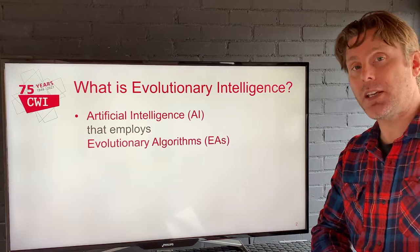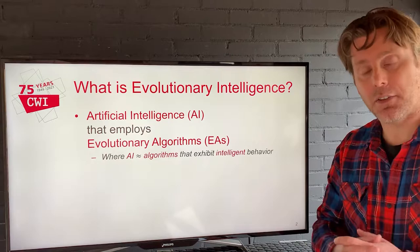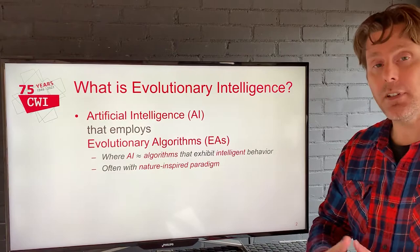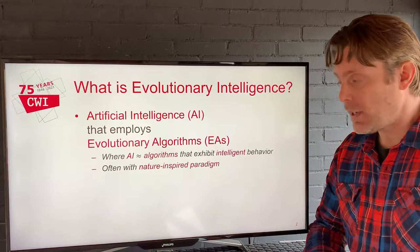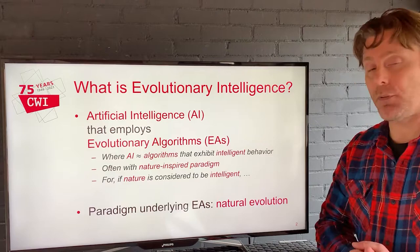Artificial intelligence is a very popular term nowadays that's open to many different definitions and interpretations, so to make sure we're on the same page I'll give you my definition. To me, AI is more or less algorithms that exhibit intelligent behavior. As a computer scientist, I like to think in terms of algorithms as they can be used to compute things on a computer. Often they have a nature-inspired paradigm — if nature is considered to be intelligent, then algorithms based on mechanisms we see in nature are somehow artificially intelligent.